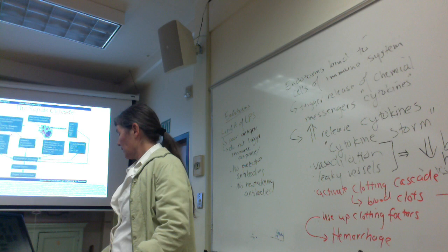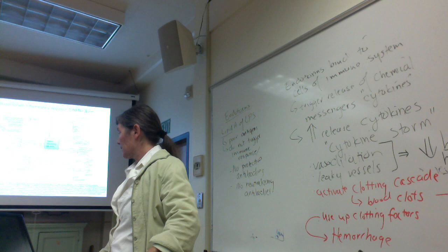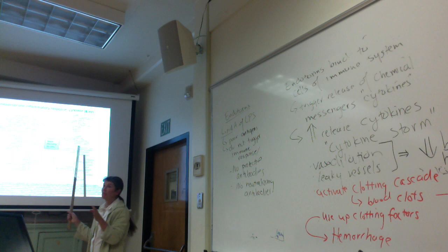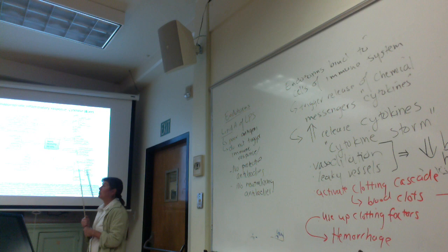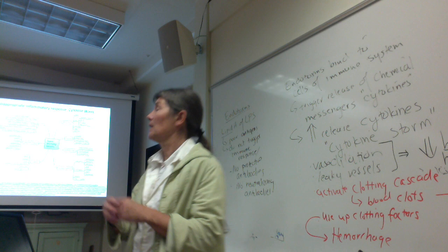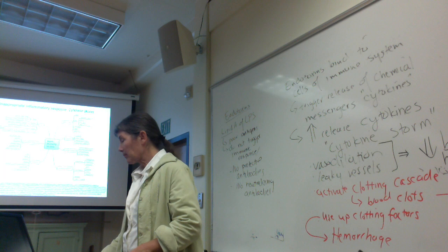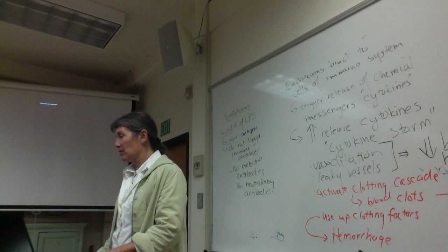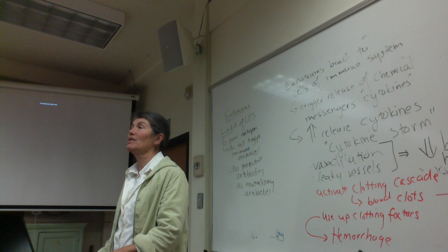Mortality from sepsis — according to various reports — can be as high as 50%, reflecting how quickly it progresses and whether the patient has access to powerful supportive care. Sepsis can be caused by gram-positive bacteria and other pathogens as well, not only gram-negative bacteria, but endotoxin from gram-negative bacteria is the specific focus here.